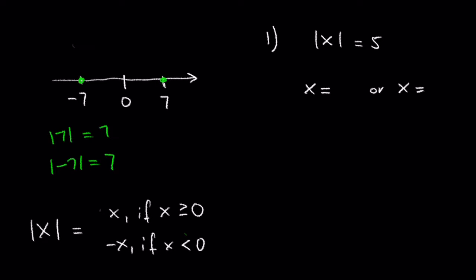The main thing to remember with absolute values in an equation is that they result in two possible solutions. In our case, the solutions would be 7 and negative 7. In math speak, the absolute value of x is x if x is greater than or equal to 0, and negative x if x is less than 0.